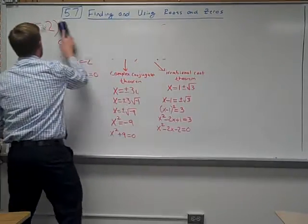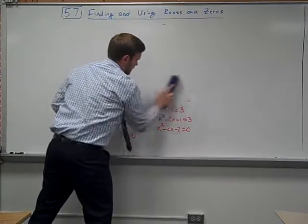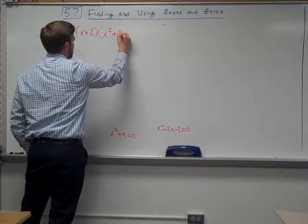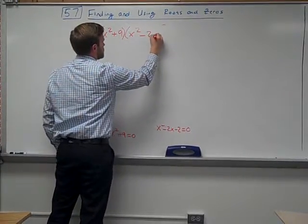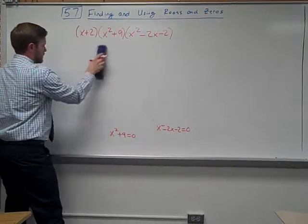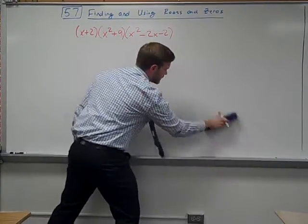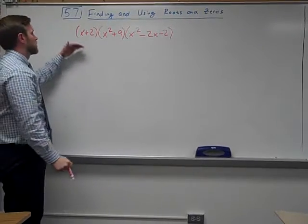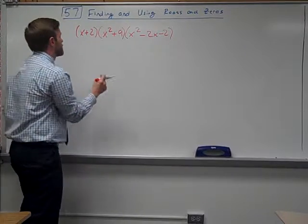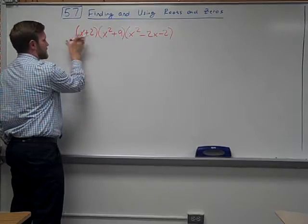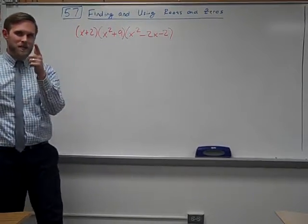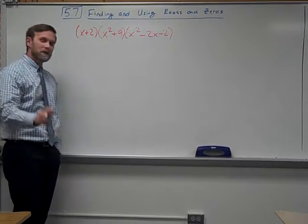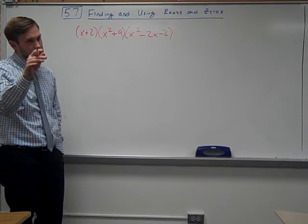So our three factors are (x + 2)(x² + 9)(x² − 2x − 2). Now we need to multiply these out. I'd recommend FOILing the first two factors and then multiplying the product by the trinomial. Pause the video now and multiply this out, then check back with me when you're done to see if you got the same answer.